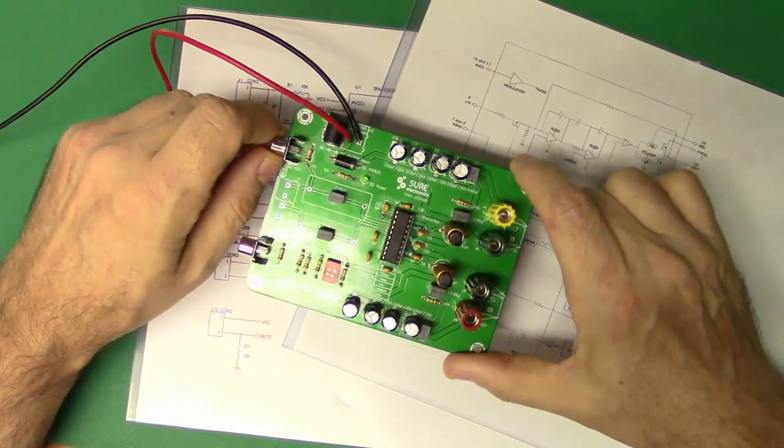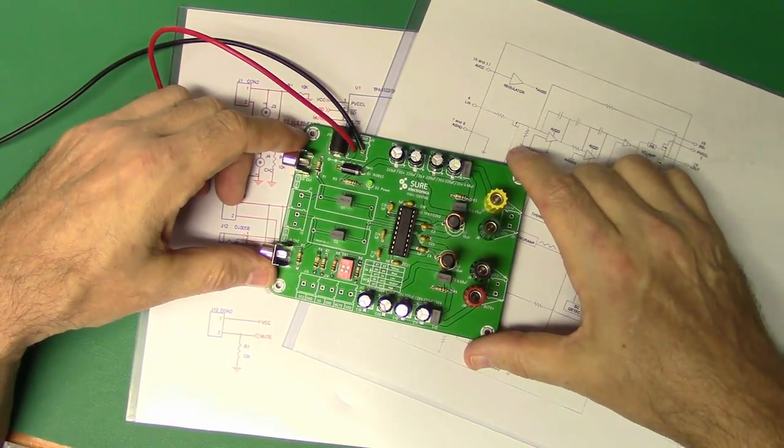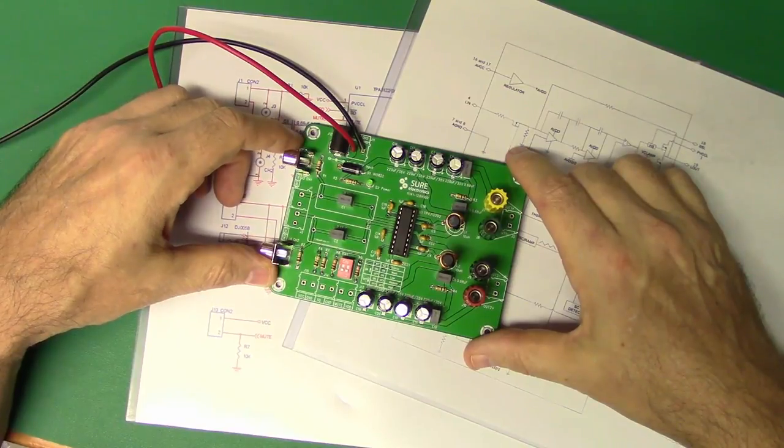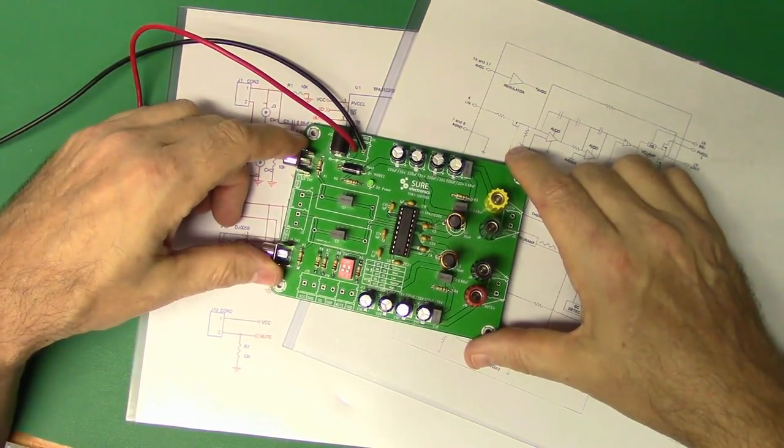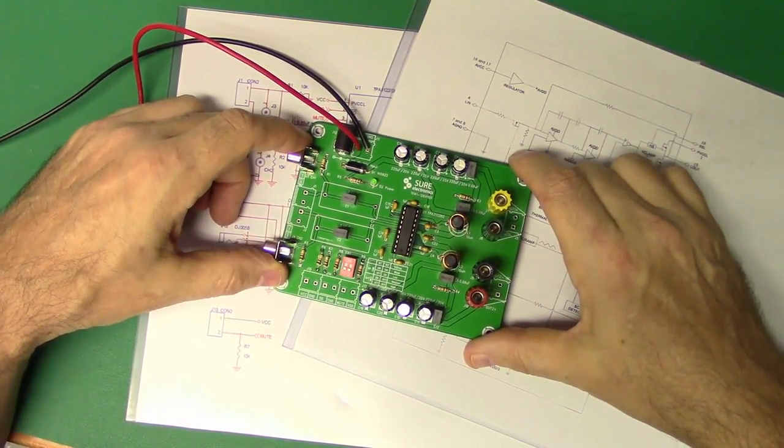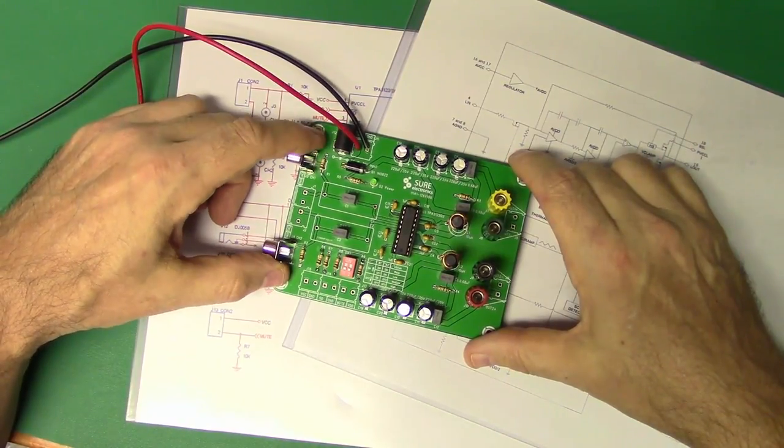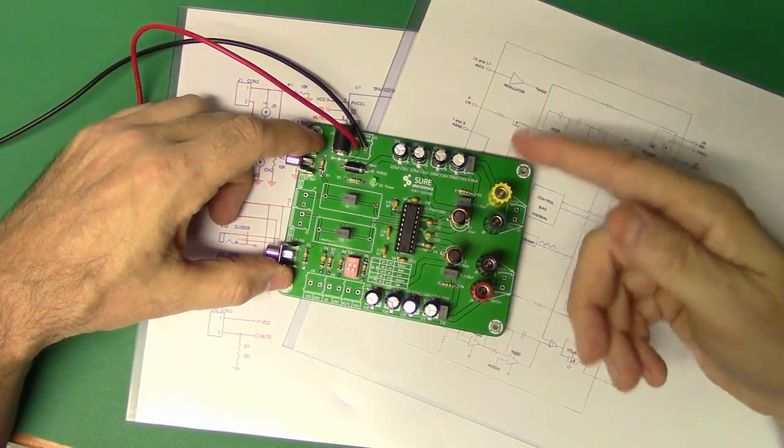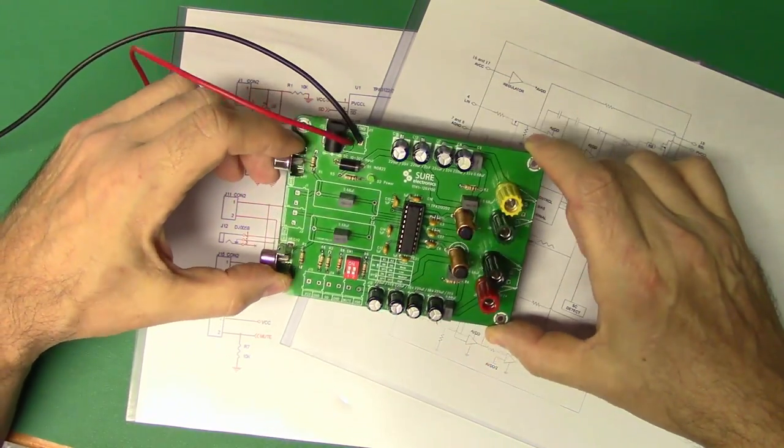Well, the Class D amplifier has to use a lot of components to do the magic that it does. Take an input, essentially sample it with a sawtooth wave, well not really sample it but check its levels with a sawtooth wave, reintegrate it so you can listen to it at the outputs. And we'll talk about how that's going to work throughout this circuit.